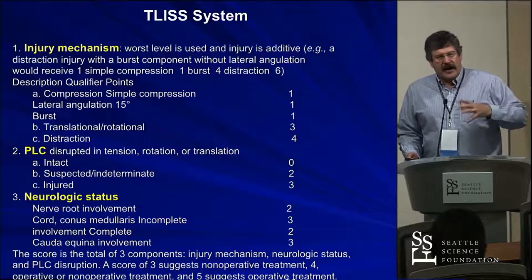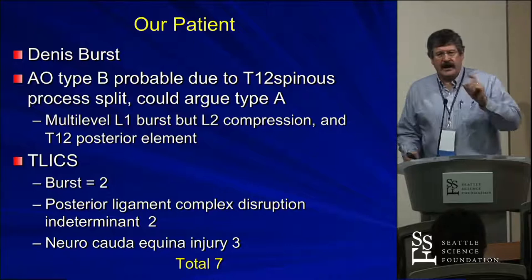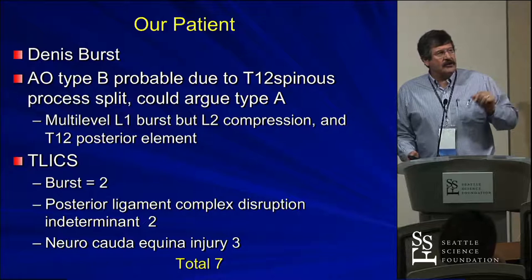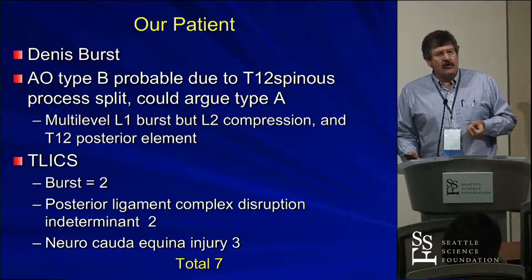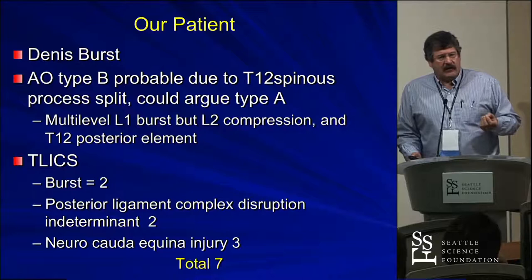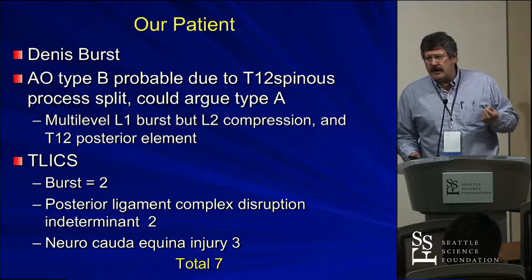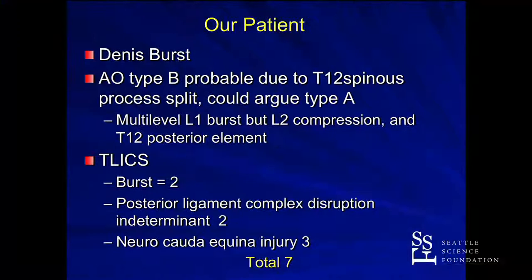Our patient was a Denis burst fracture, with the middle column involved. In the original AO he was a type B, probably, because the T12 spinous process was out — you could argue it was an A3. In the TLICS classification, he got two for burst. The posterior ligamentous complex had some fracture but it wasn't clear, so it got a two as indeterminate. But there was a cauda equina injury, which meant it got a three. So it was a seven total — that's an operative fracture based on that.